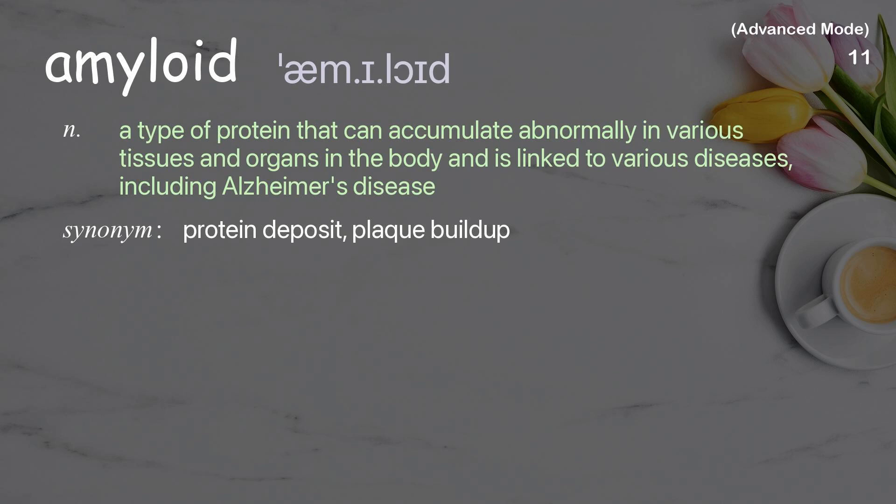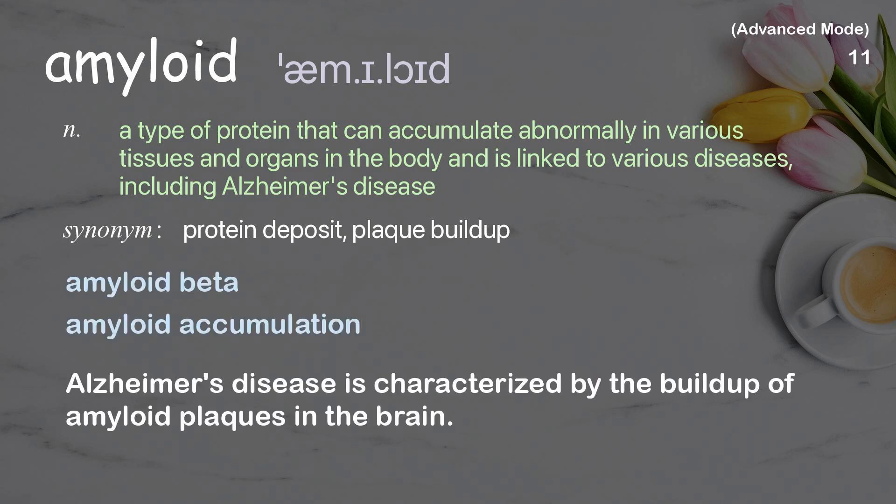Amyloid: A type of protein that can accumulate abnormally in various tissues and organs in the body and is linked to various diseases, including Alzheimer's disease. Examples: Amyloid beta, Amyloid accumulation. Alzheimer's disease is characterized by the buildup of amyloid plaques in the brain.